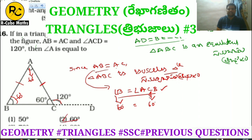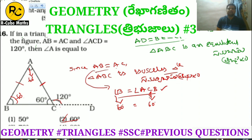Verification: The exterior angle equals the sum of the two opposite interior angles. So 60 plus 60 equals 120 degrees, which confirms our answer. The answer is option 2.